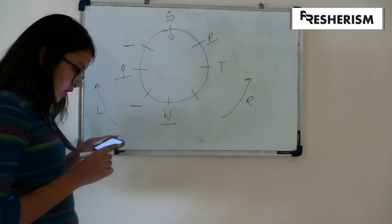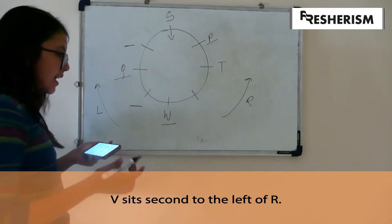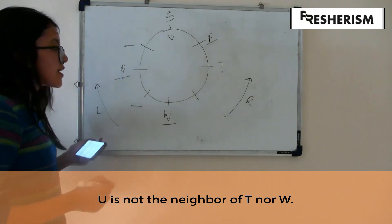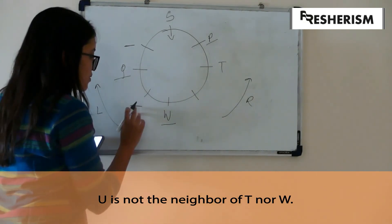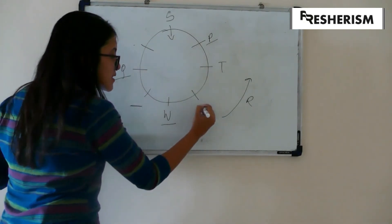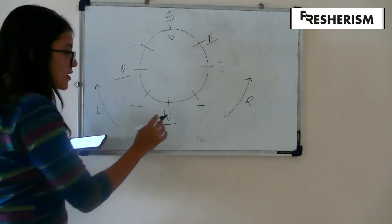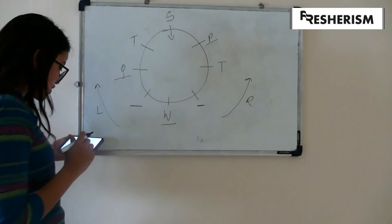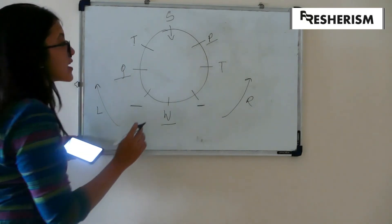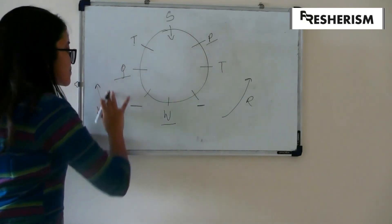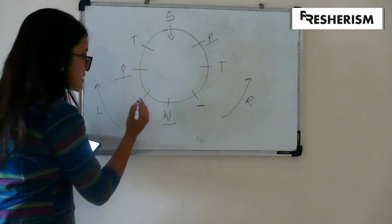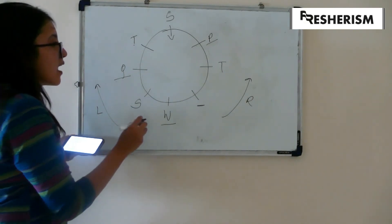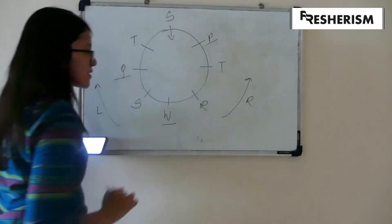Moving on with the conditions: V sits second to the left of R, but we don't have V or R yet. U is not the neighbor of T or W. Neighbors of W would be this or this. Therefore, T sits over here. Coming back to the condition before: S sits second to the right of T. The right hand side of T gives us this, and the second position is this, so S sits over here. Now the only person left is R, therefore R will sit over here.